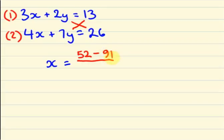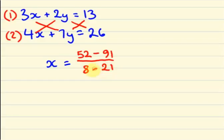So 52 minus 91, divided by: the y component of the first equation 2 multiplied by the x component of my second equation 4 — that is 2 into 4 is 8 — minus the y component of my second equation 7 multiplied by the x component of my first equation 3, giving 7 into 3 is 21. So we have 52 minus 91 divided by 8 minus 21.